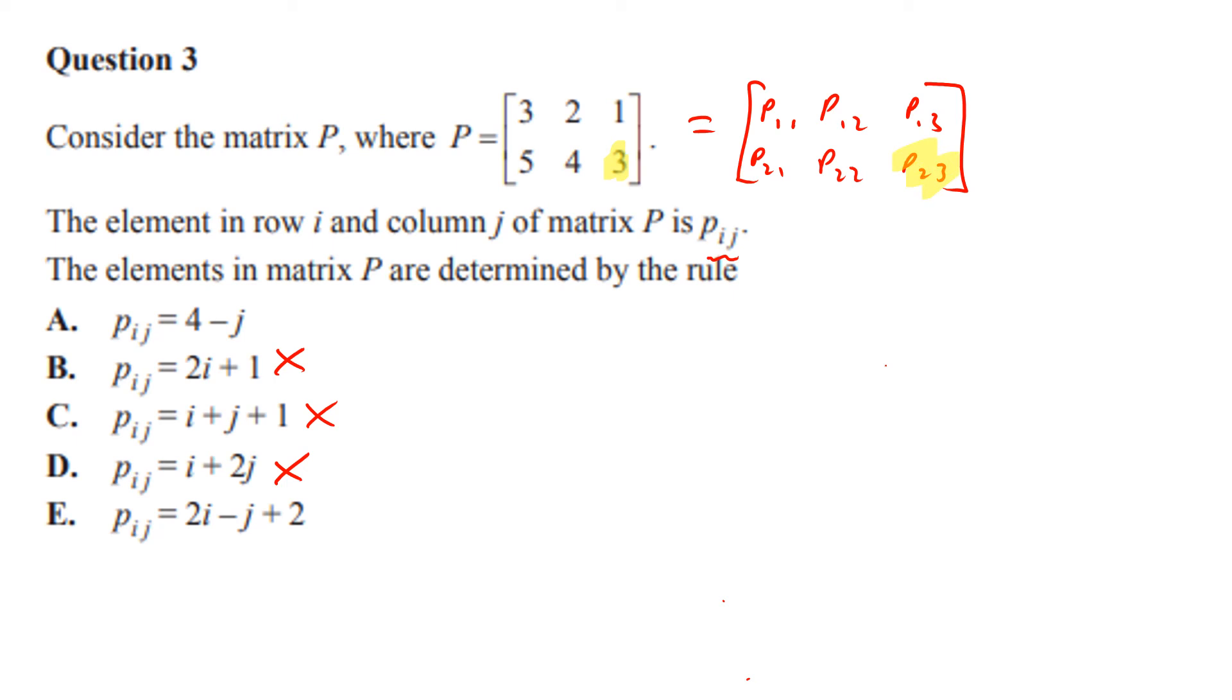In this case, i is 2 and j is 3. That bottom right-hand corner might sometimes be the best place to start, because they'll never make it work for every single element. 4 minus 3 is 1. That is wrong.